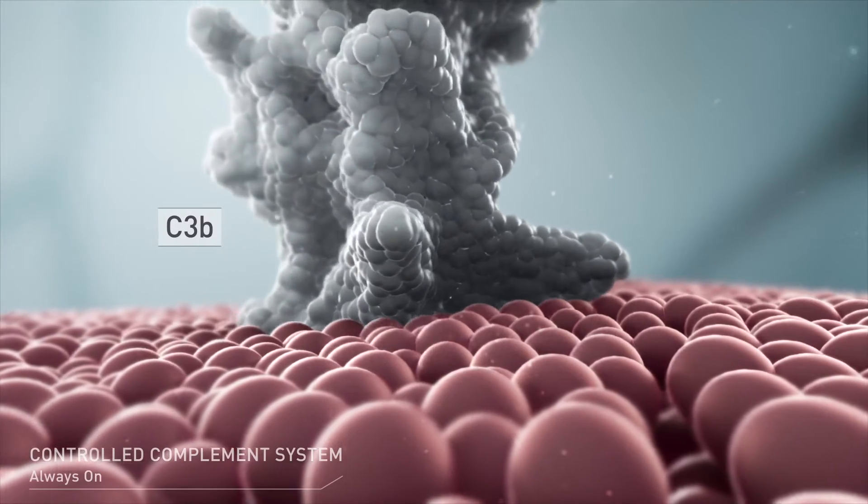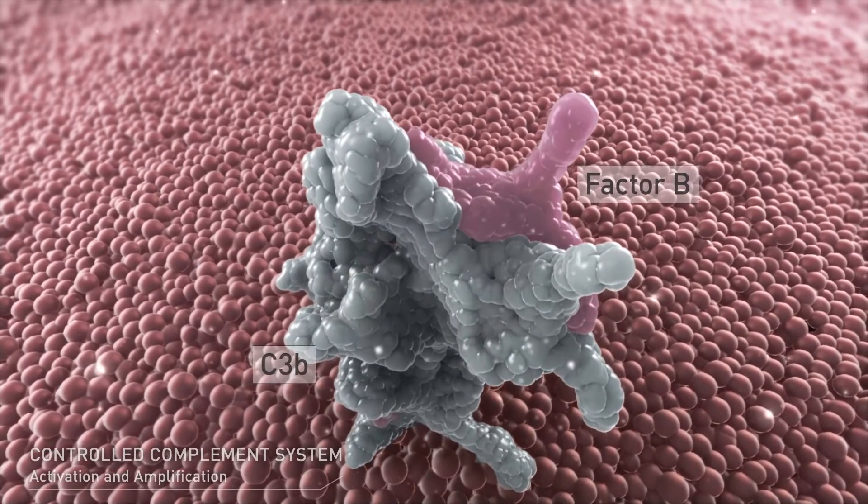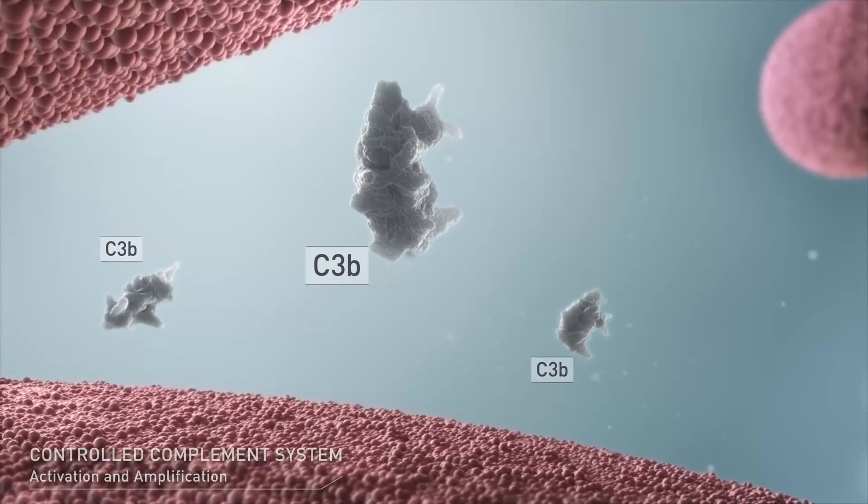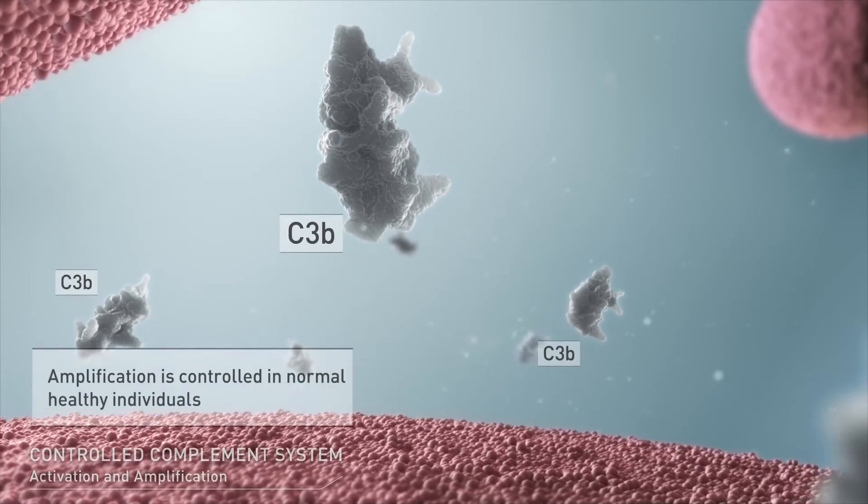The presence of simple infections, toxins, antibody antigen complexes, trauma and other triggers results in rapidly increasing production of C3 Convertase, a process called amplification.